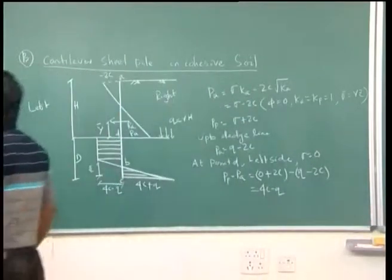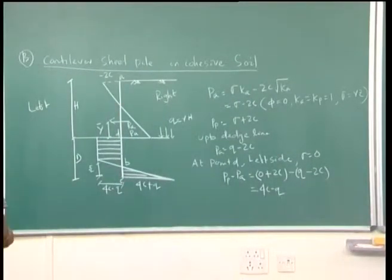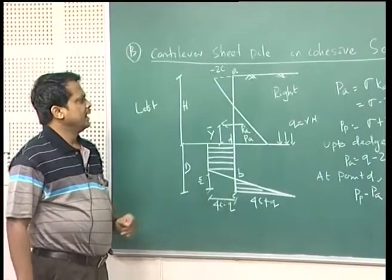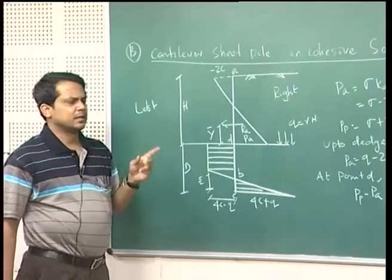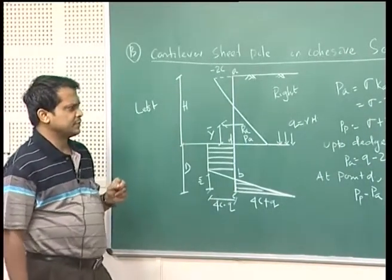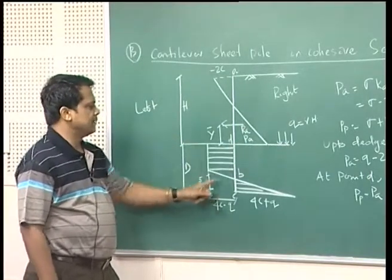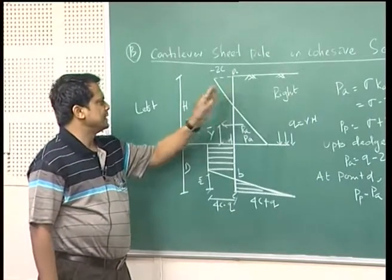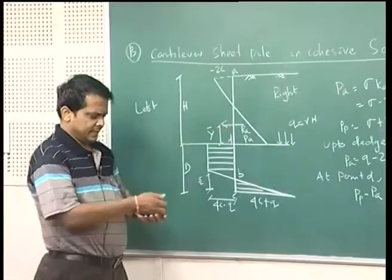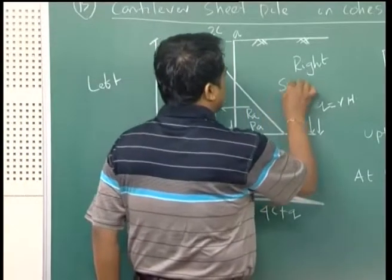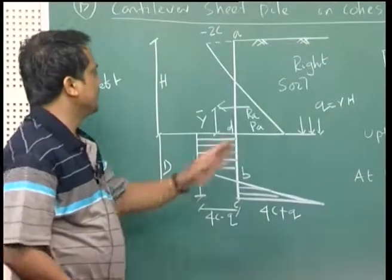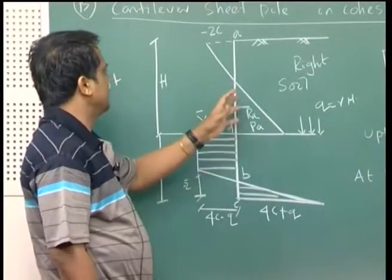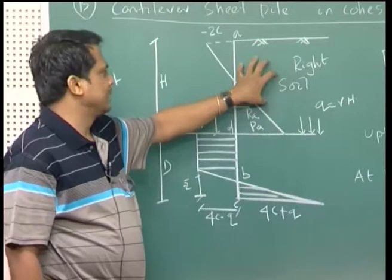Looking at how this pressure distribution diagram has been derived: this is the sheet pile wall embedded inside cohesive soil. On the right side it retains the soil, so the soil exerts pressure on the wall — the wall moves away from the soil — meaning this part is acted upon by active earth pressure.